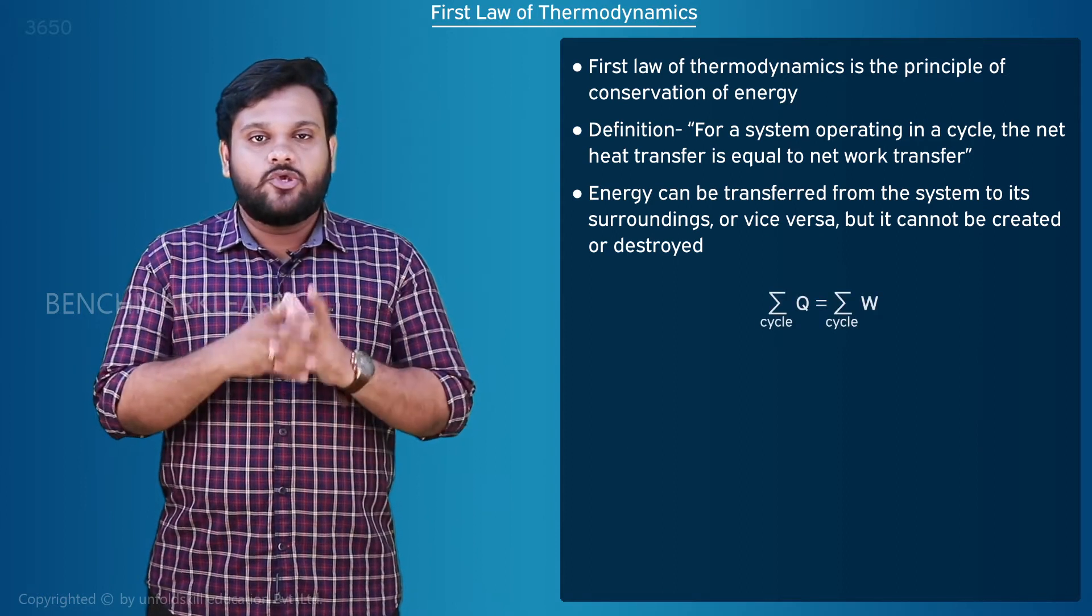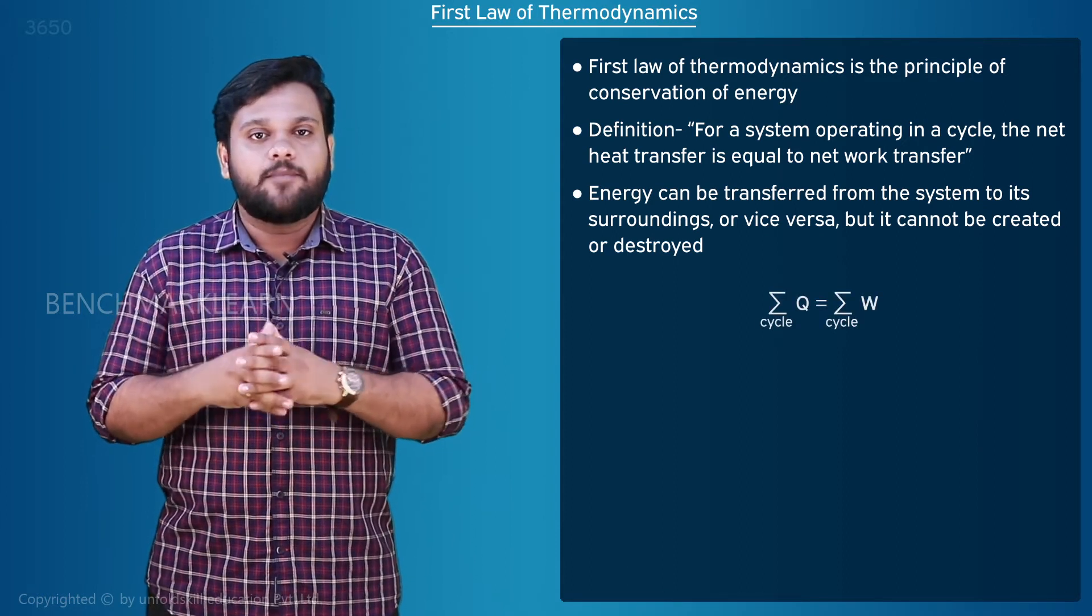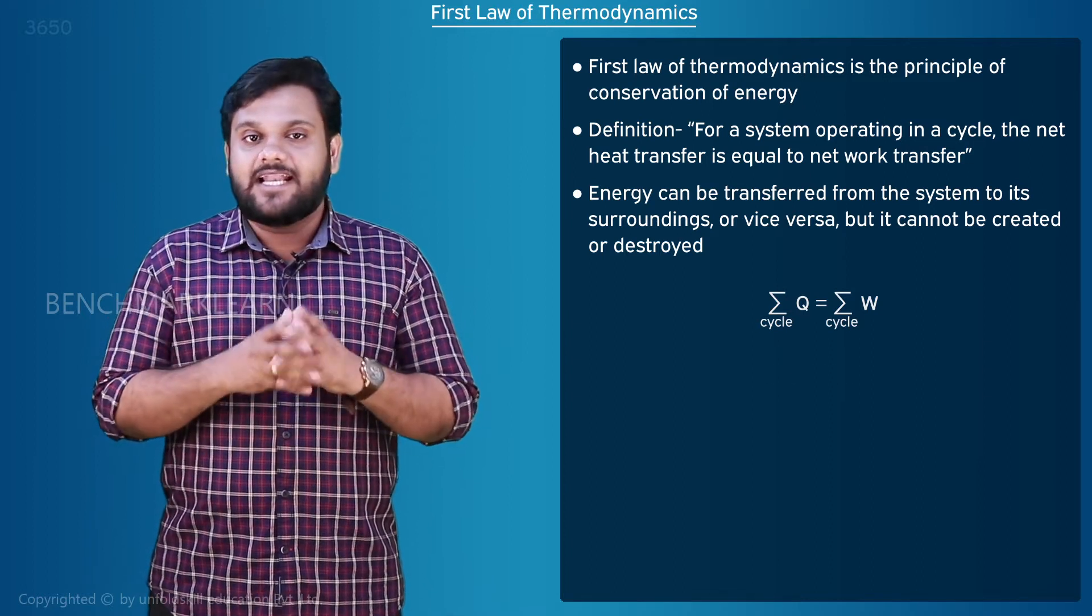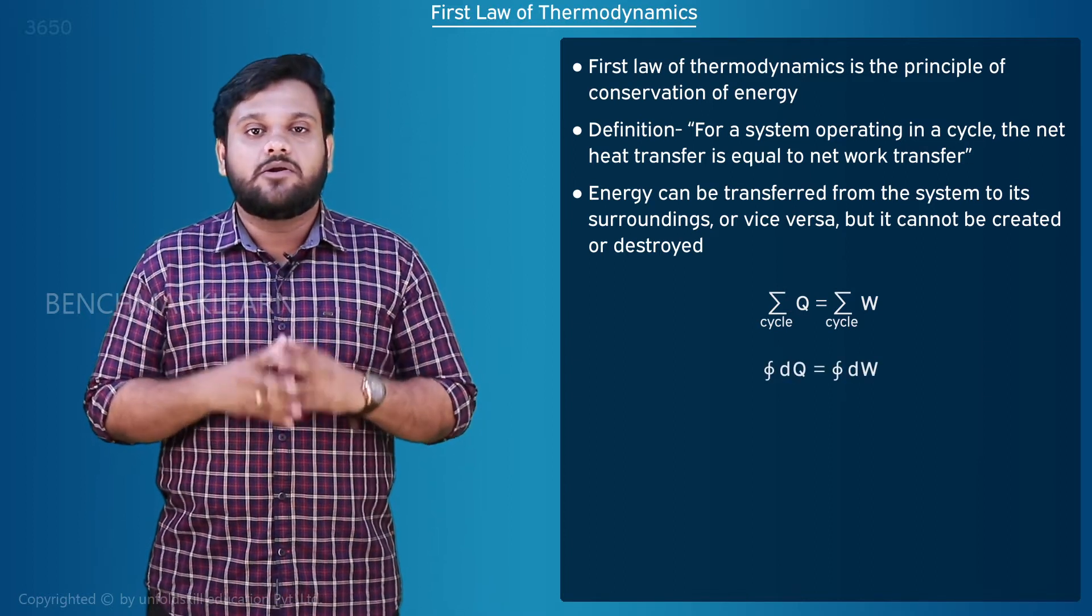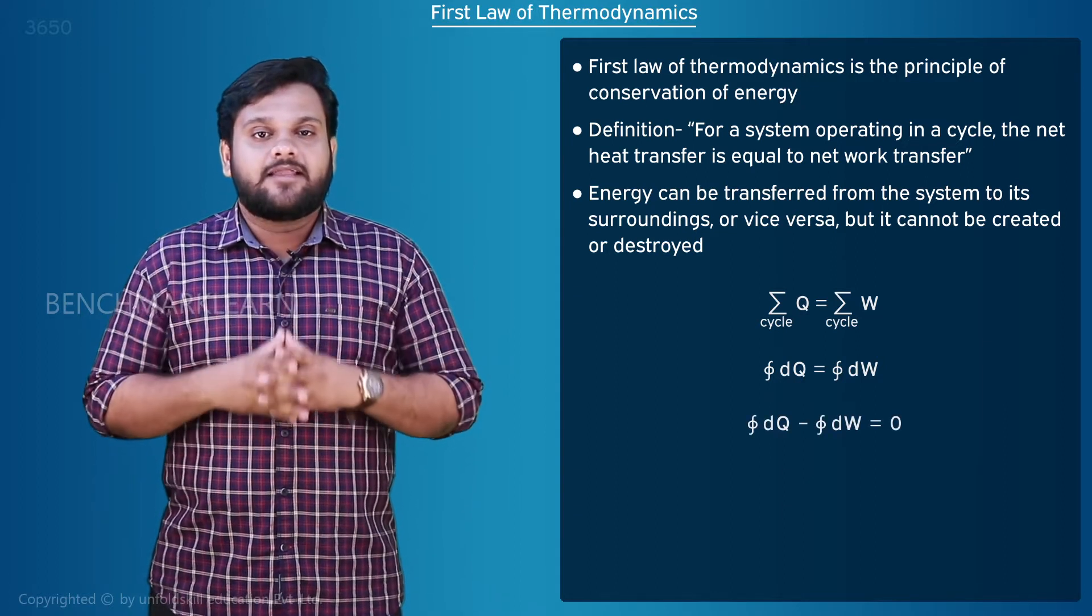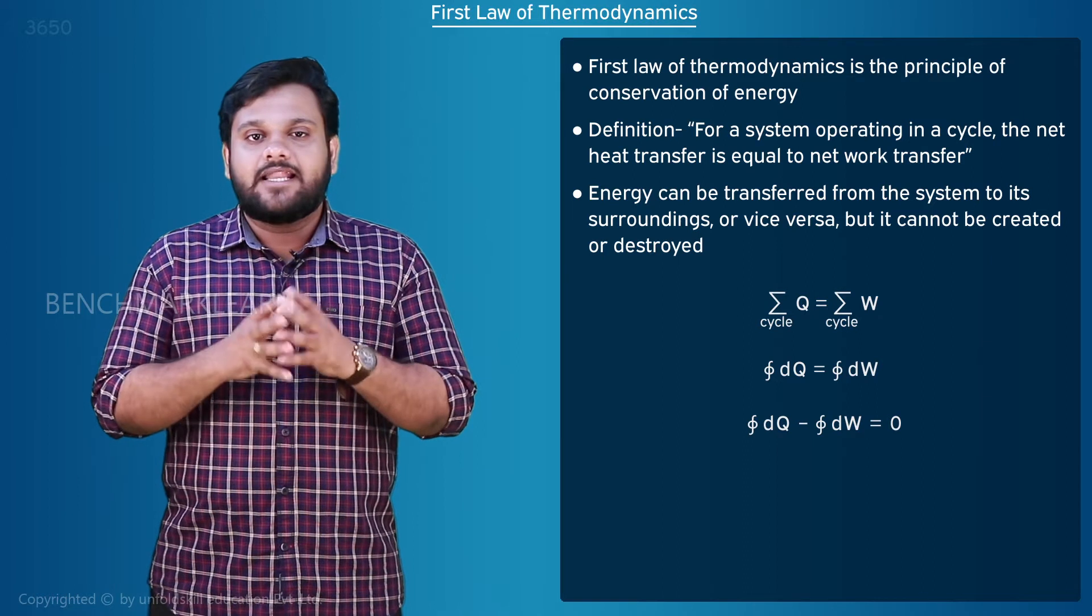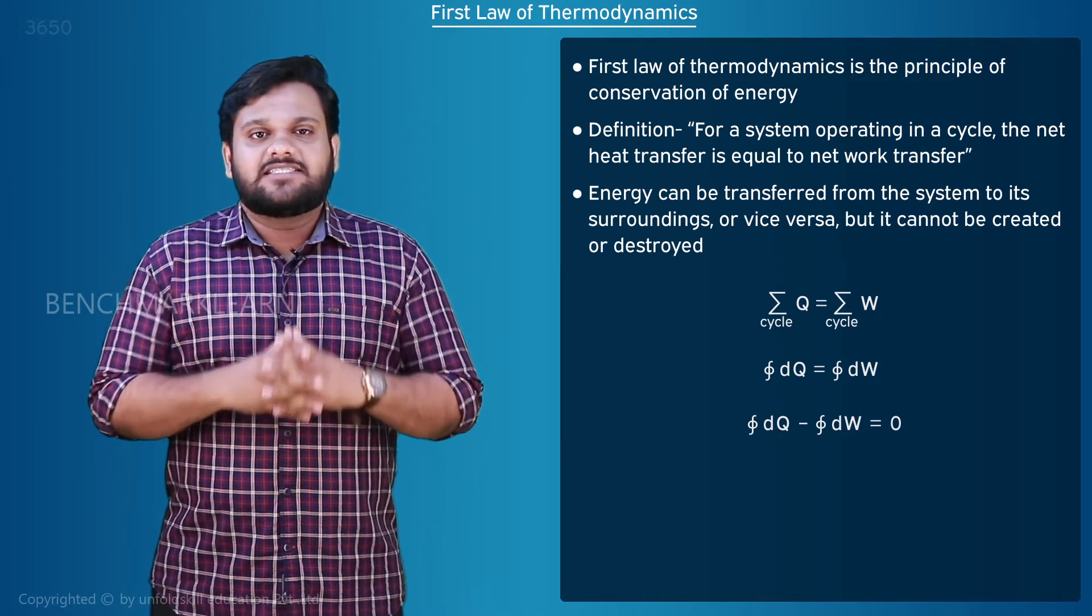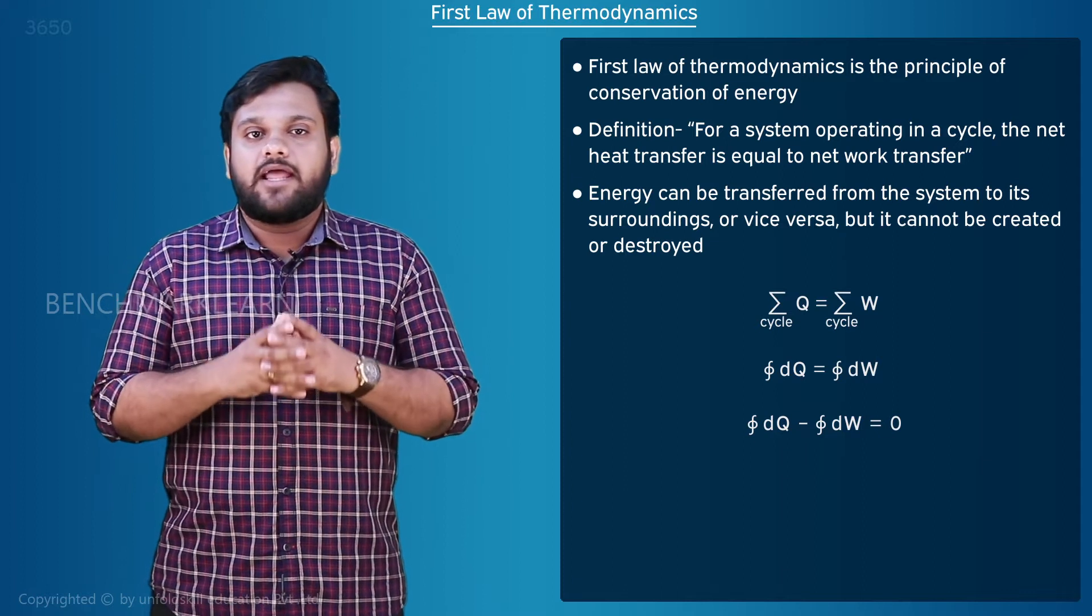The net heat Q is equal to the net work W. In integral form we can write the cyclic integral dQ is equal to cyclic integral dW. The cyclic integral dQ minus cyclic integral dW is equal to zero. This is the first law applied to a thermodynamic cycle.